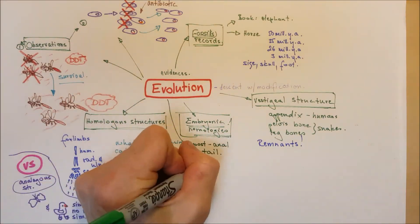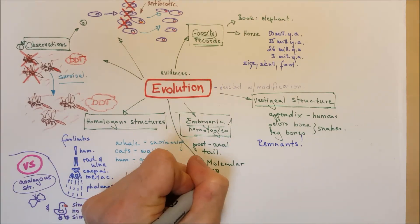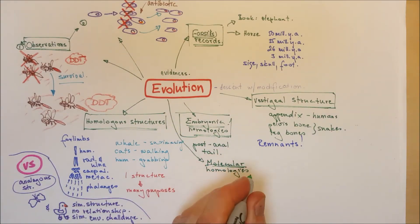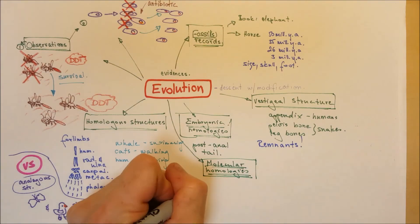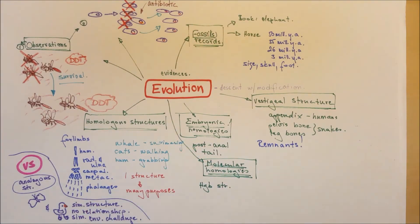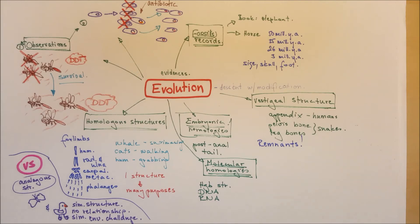Now, the next one is molecular homologies. Molecular homologies, the hemoglobin structures, the DNA and RNA structures in different organisms are similar.